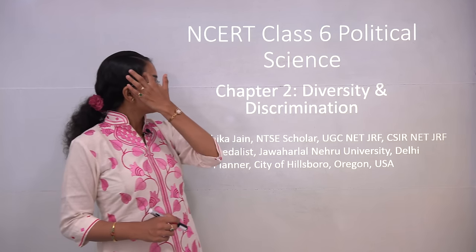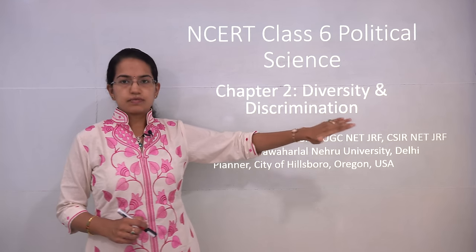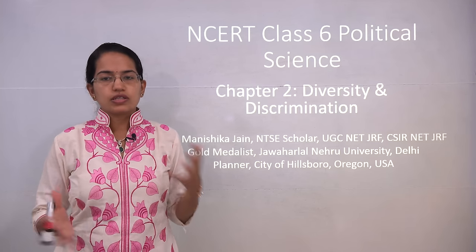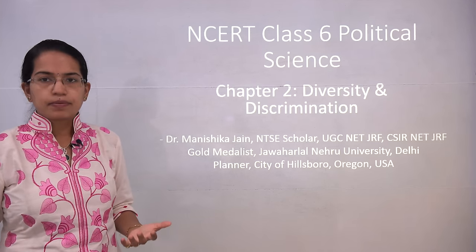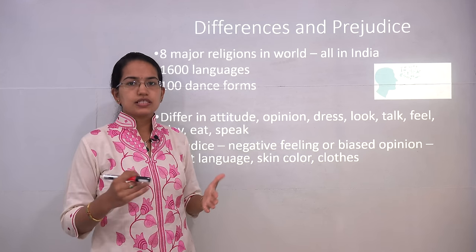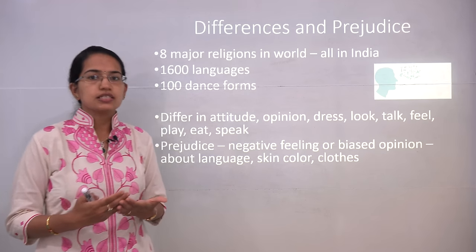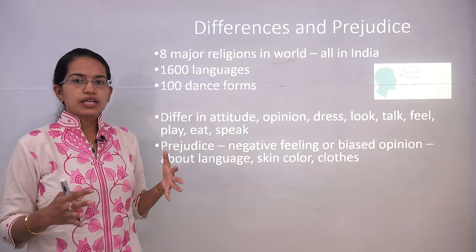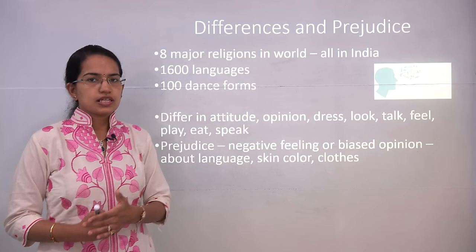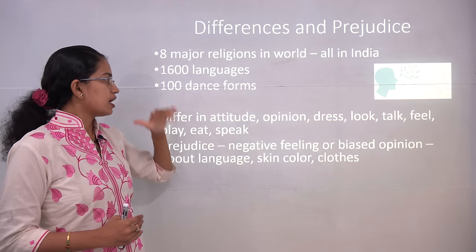Welcome. We will start with Class 6 NCERT Political Science, the second chapter that talks about diversity and discrimination. In the last chapter we talked about diversity and about India with the concept of unity and diversity given by Pandit Nehru. In India, as we see, there are lots of differences — in terms of languages, religion, and culture. India is home to nearly 8 major religions of the world, nearly 1600 languages, and more than 100 dance forms.